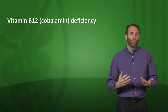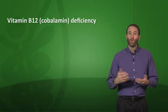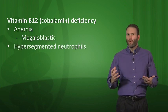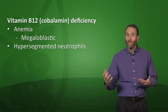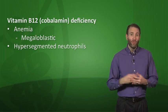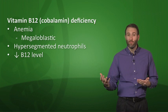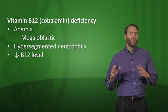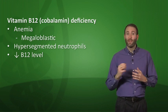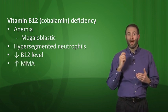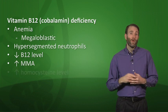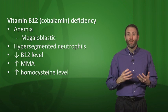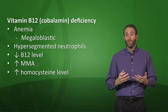With a B12 deficiency, just like folate deficiency, you see megaloblastic anemia with hypersegmented neutrophils. To determine if a megaloblastic anemia is caused by folate or B12 deficiency, you can check serum B12 and folate levels. If the B12 level is low-normal, you can also check for elevated methylmalonic acid (MMA) or elevated homocysteine. MMA requires B12 to be metabolized, so it is elevated when B12 is inadequate. Homocysteine is elevated because B12 is needed to convert it to methionine.